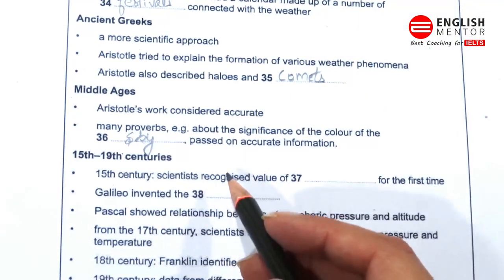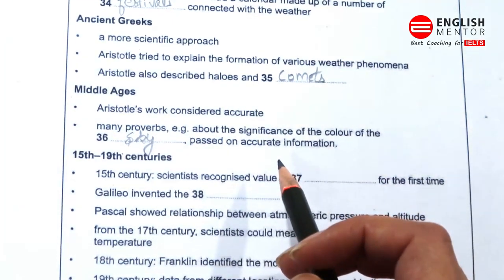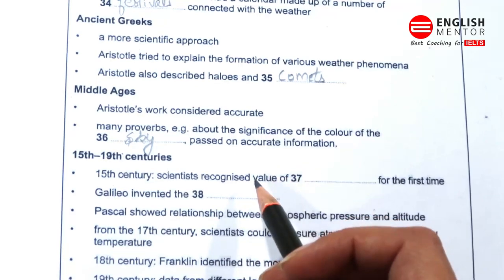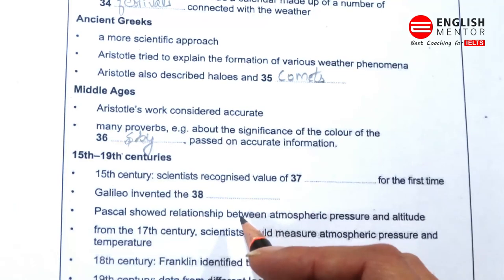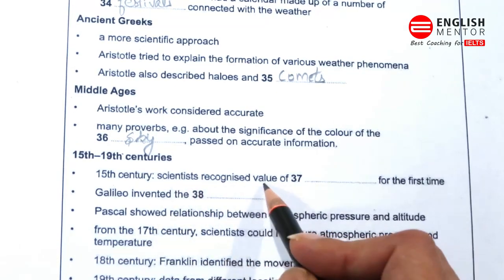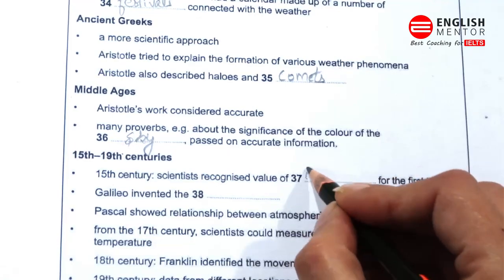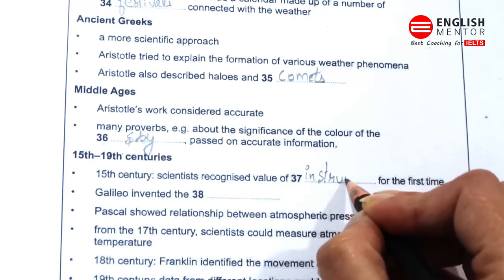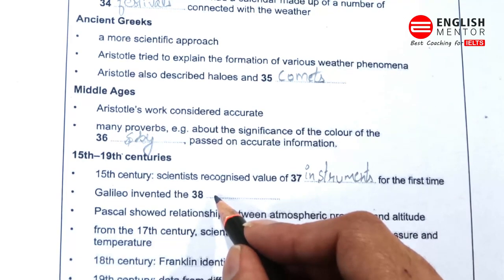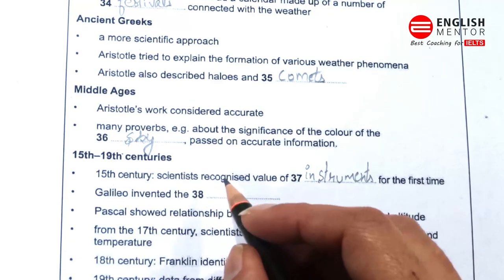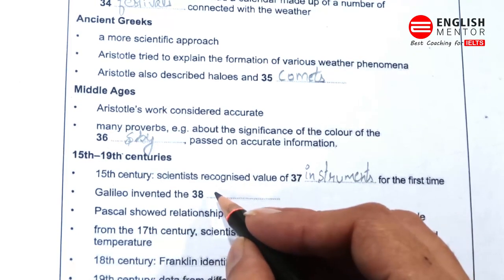For centuries, any attempt to forecast the weather could only be based on personal observations. But in the 15th century, scientists began to see the need for instruments. Until then, the only ones available were weather vanes to determine the wind direction and early versions of rain gauges. One of the first invented in the 15th century was a hygrometer, which measured humidity. This was one of many inventions that contributed to the development of weather forecasting.